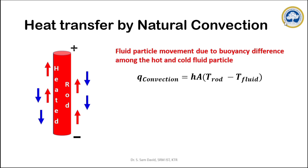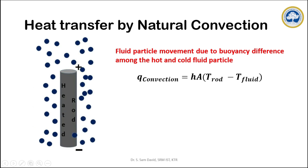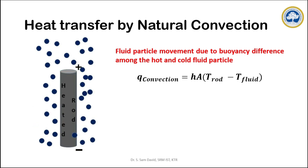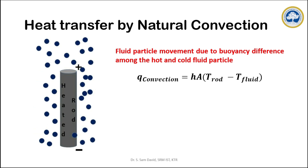When the bulk movement of fluid particles during heat transfer is due to an external force, it is called forced convection. When the movement of particles is due to buoyancy difference between the hot and cold particles, it is termed natural convection. As shown in this schematic, fluid particles near the heater rod absorb heat energy and become warmer, then rise up while colder, denser particles move down — a movement driven by density difference created by temperature difference.